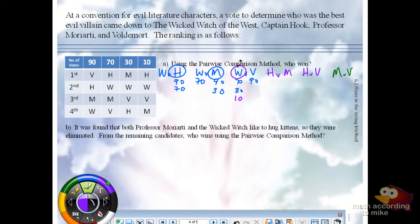Hook versus Moriarty. Hook wins, 90 and 70. We can stop there. Hook versus Voldemort. Voldemort's going to win. Voldemort gets the first column with 90 and the third column with 30.